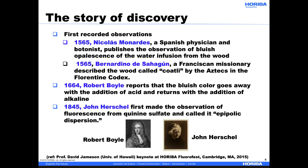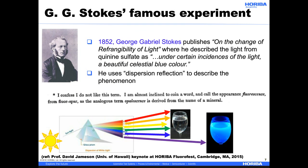This included Robert Boyle in 1664 and John Herschel in 1845. Then, in 1852, George Stokes published on the change of refrangibility of light, where he describes his experiment using sunlight through a prism. He illuminated quinine with different colors and noted that the solution only glows blue when he used ultraviolet wavelengths, and is dark for all other wavelengths. He sees, under certain incidences of the light, a beautiful celestial blue color. He uses the term dispersion reflection, but then notes, 'I confess I do not like this term. I am almost inclined to coin a word and call the appearance fluorescence, from fluorespar, as the analogous term opalescence is derived from the name of a mineral.' And so, fluorescence was named.